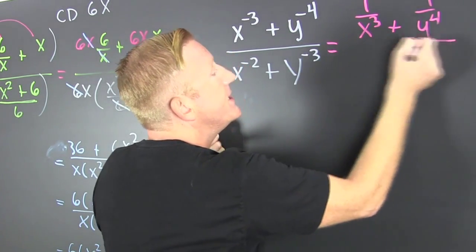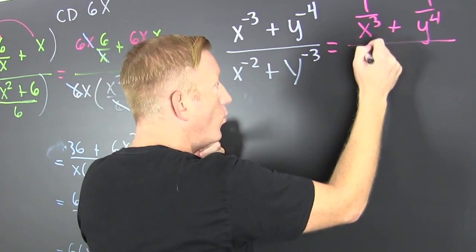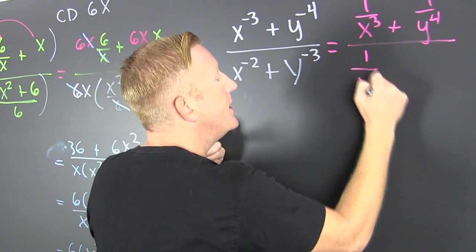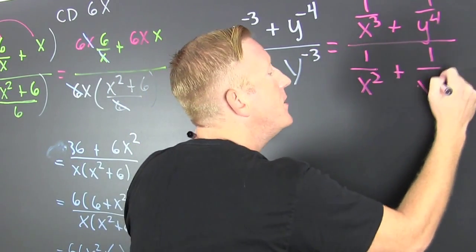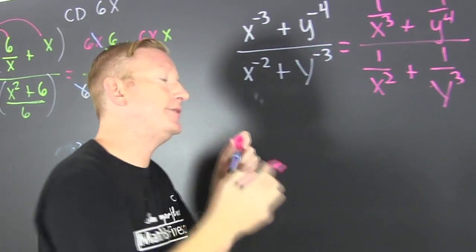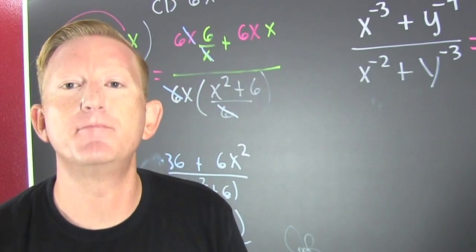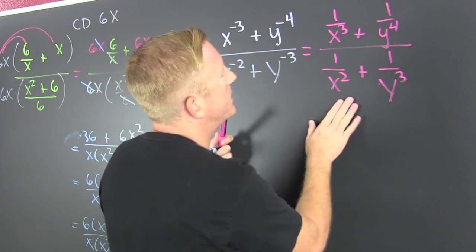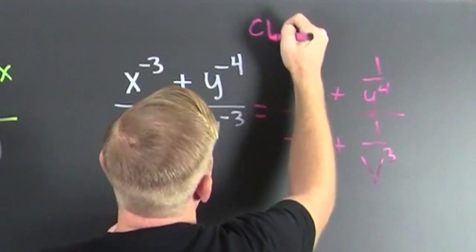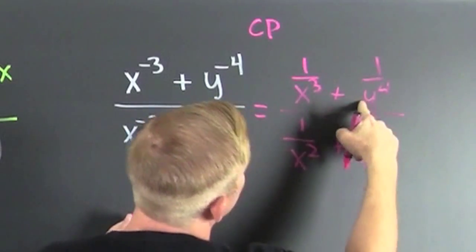That minus sign. So then I take that 1 over x to the 3rd plus 1 over y to the 4th minus 1 over x squared plus 1 over y to the 3rd. And then to clear those fractions, I'm going to multiply top and bottom by the common denominator. The common denominator of all the denominators is going to be...